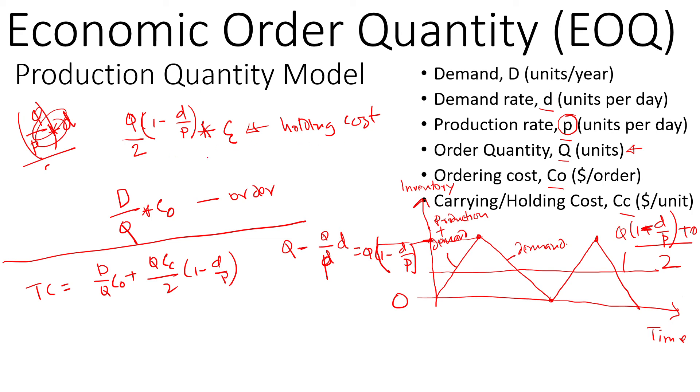If we plot this, for example the holding cost is a straight line through the origin. If you plot the inventory cost versus the order size Q, you can see this is a constant, so this is y equals mx type of situation—a straight line through the origin.